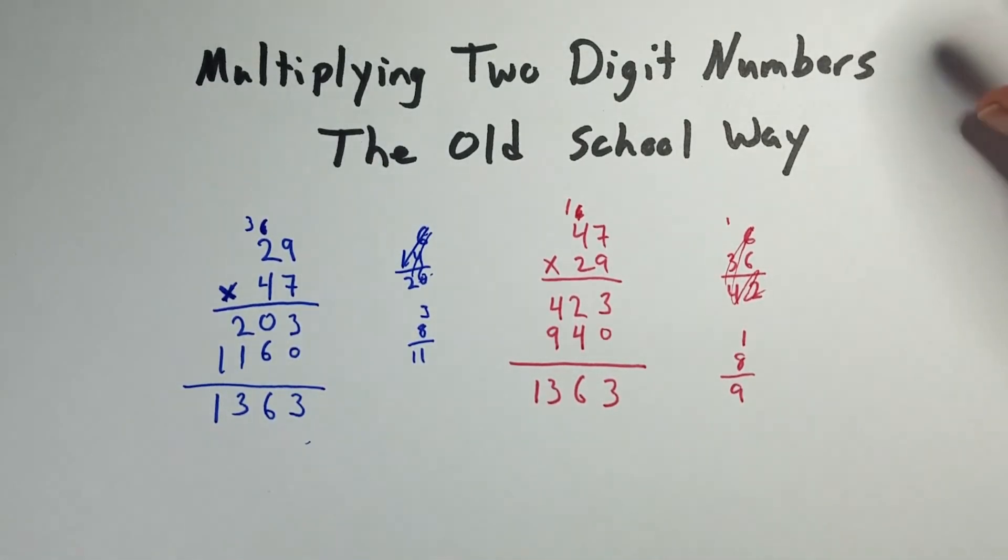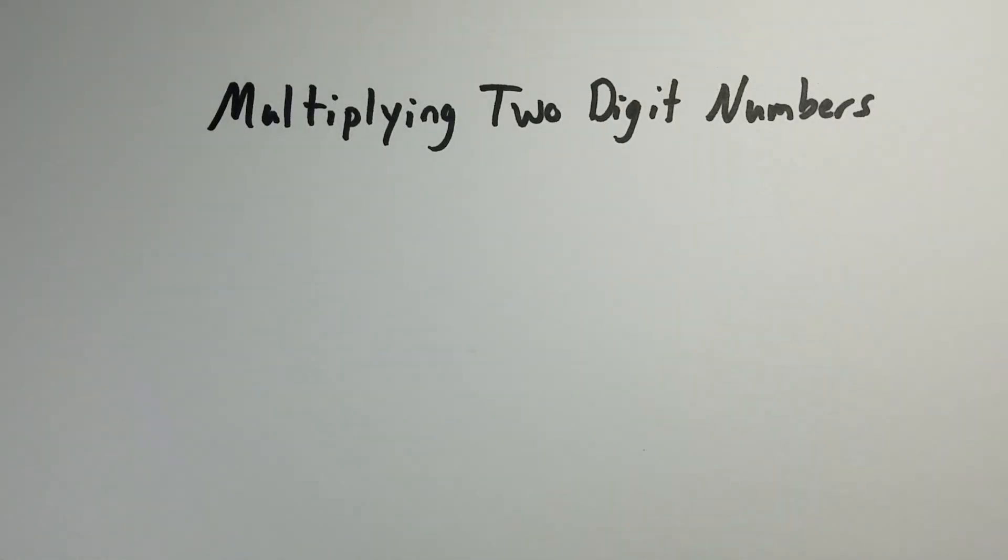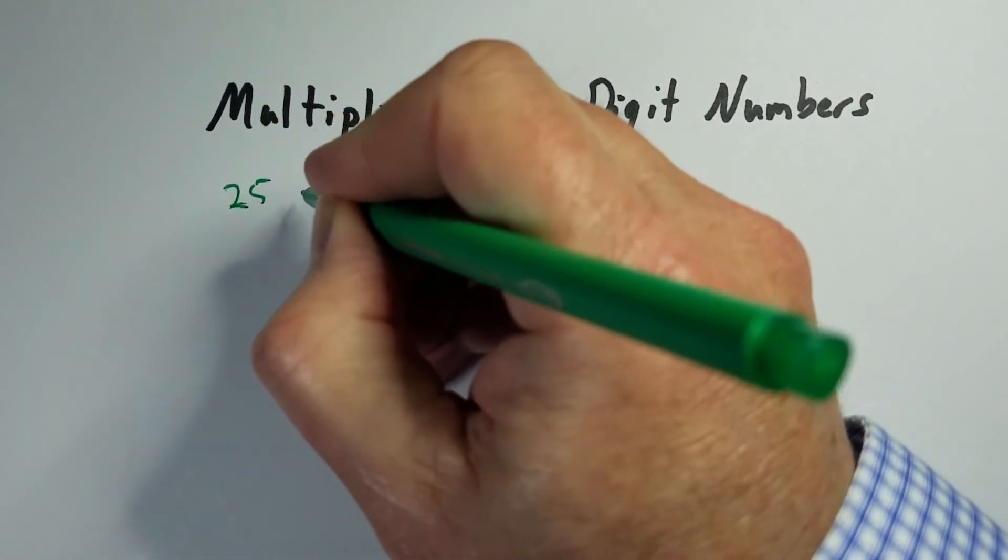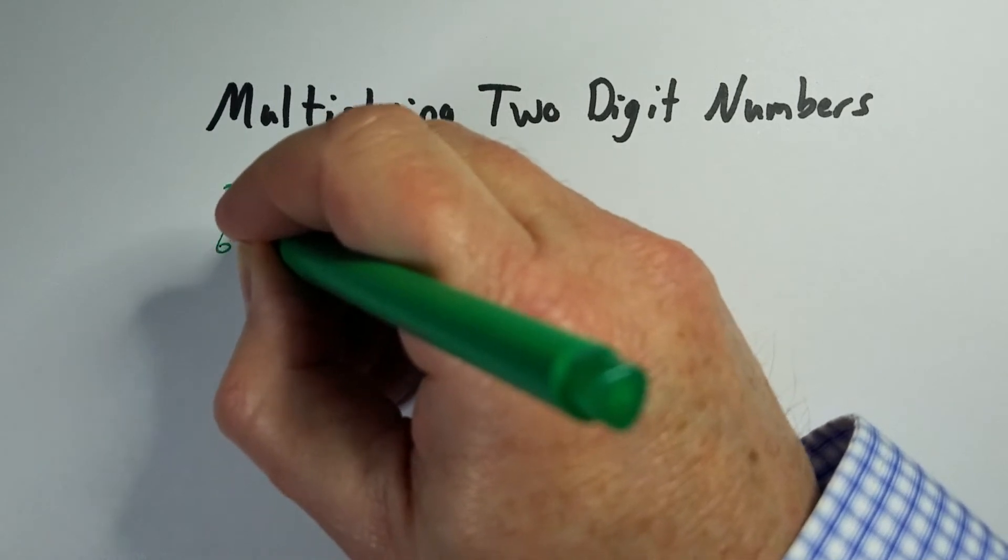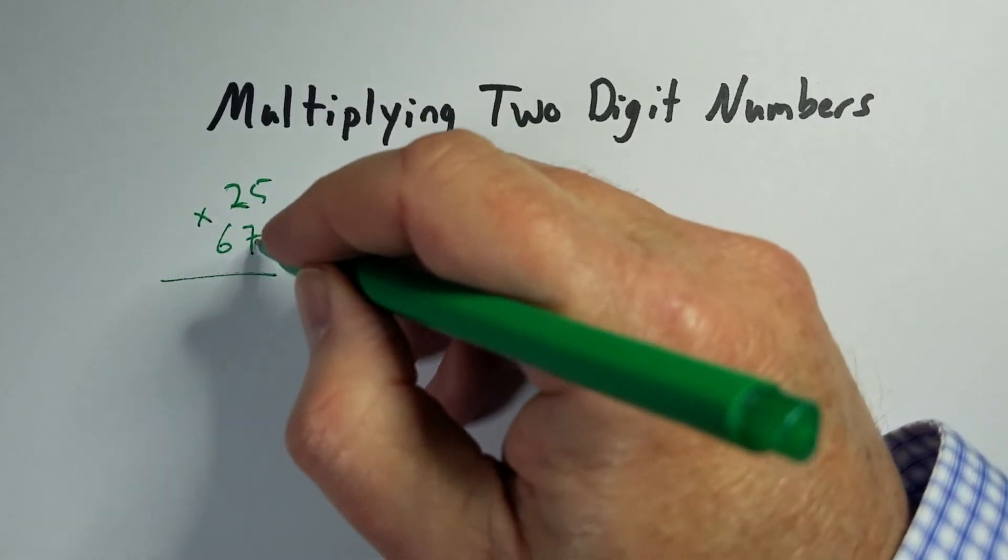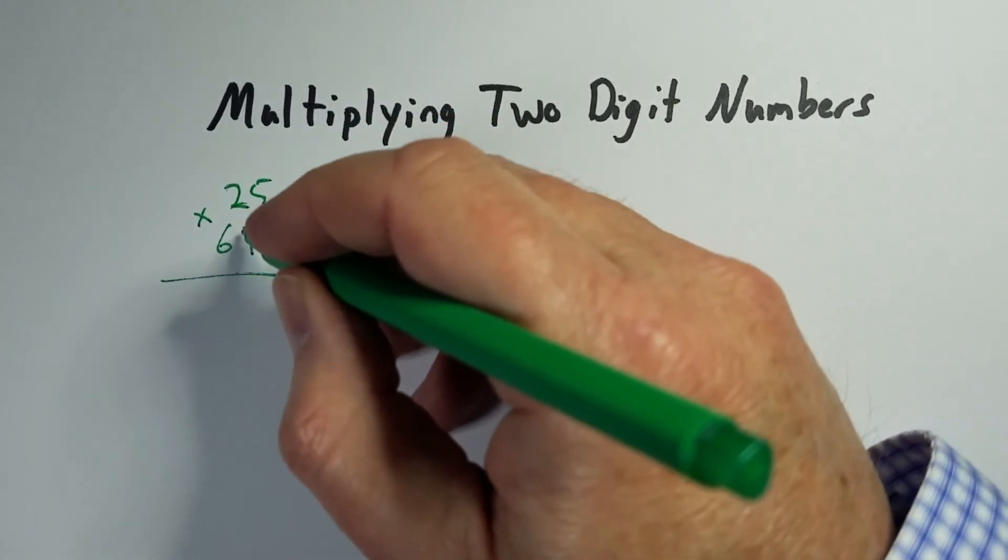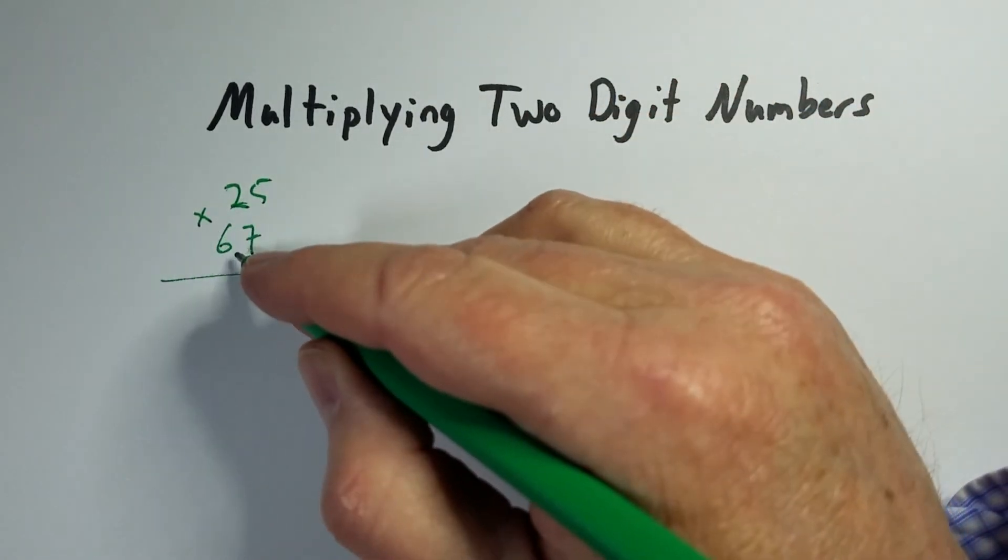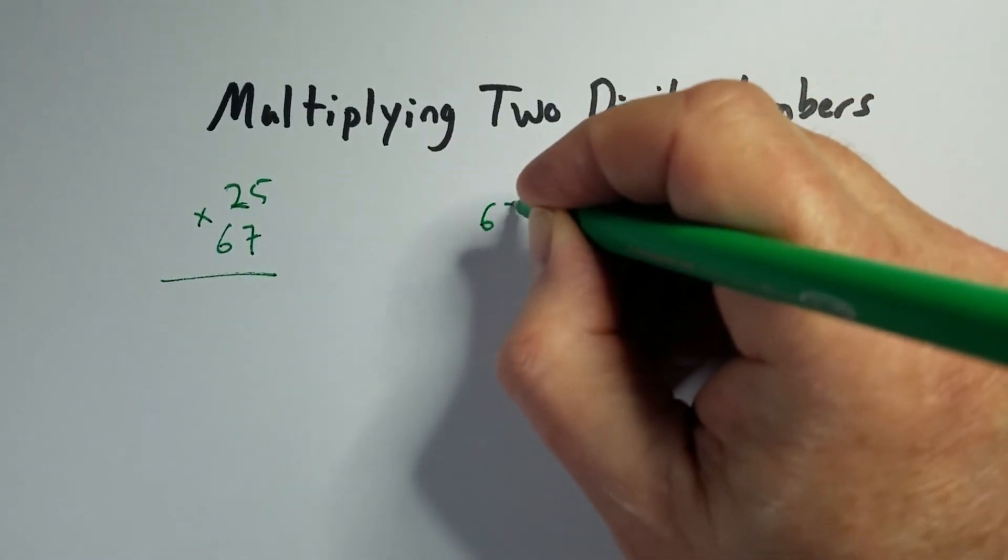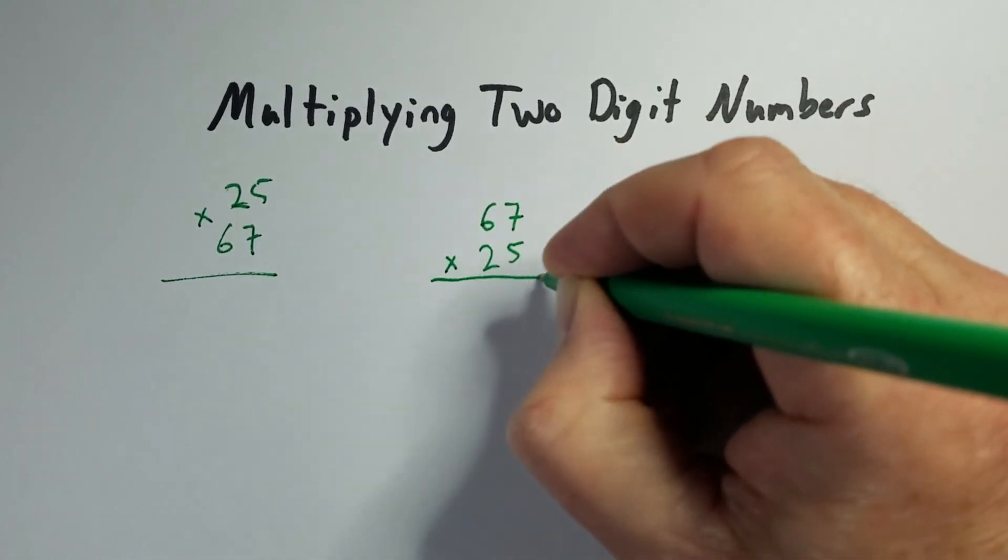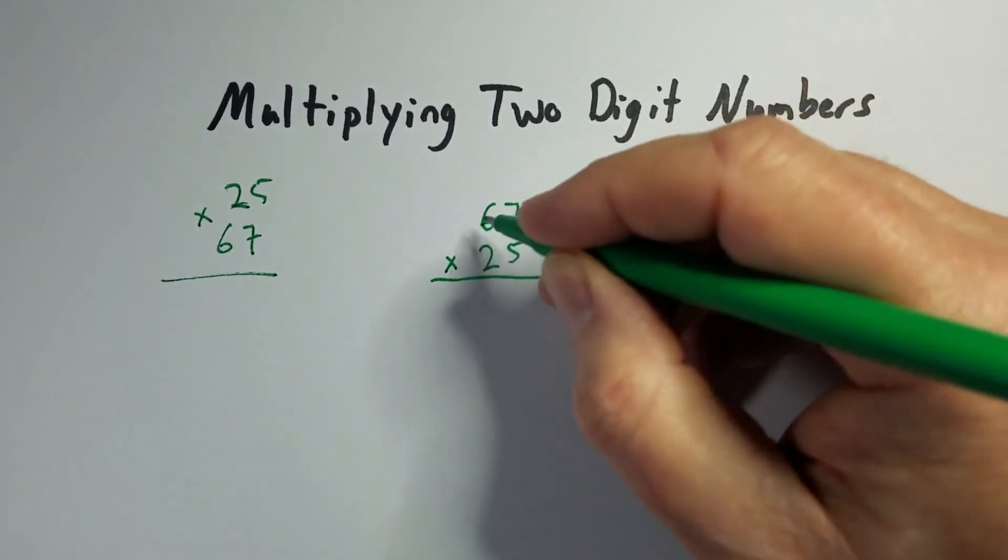Now what you can do is set things up so you maybe have a little bit easier math. So let's say I want to multiply 25 and 67. Now I could multiply it like this, but that leaves me a little bit harder math I think, at least psychologically. I would rather do it like this: 67 times 25, because it's easier for me to multiply by 5s and 2s than 6s and 7s.